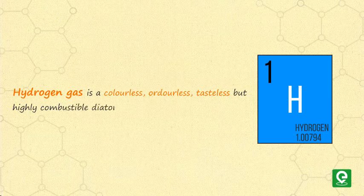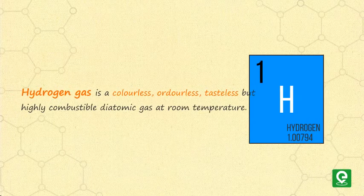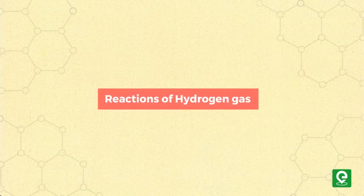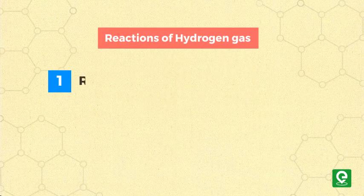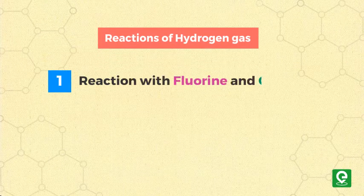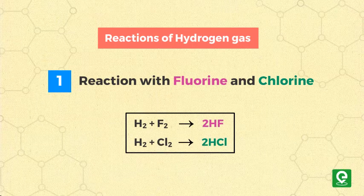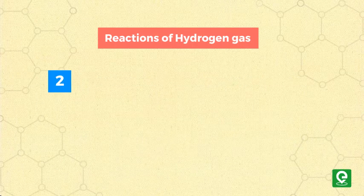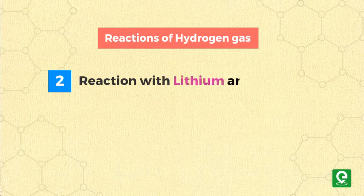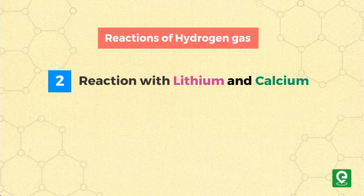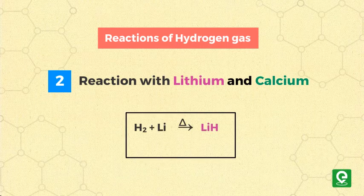Reactions of hydrogen gas: 1) Hydrogen reacts with fluorine and chlorine to form hydrogen fluoride and hydrogen chloride. 2) Hydrogen reacts with lithium and calcium metals in presence of heat to form lithium hydride and calcium hydride.